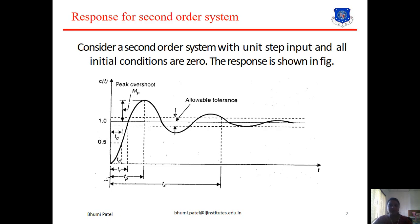The transient response of these systems to a unit step input depends on the initial condition. For convenience, it is common practice to use standard initial conditions where the system is at rest initially, with the output and all time derivatives equal to zero, so we can easily compute this response. Here you can see a transient response followed by a steady state response. In the transient response, we can get the maximum error, so we derive different parameters for the second order system response.